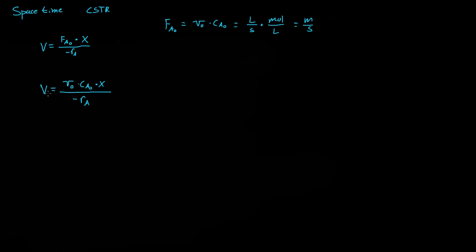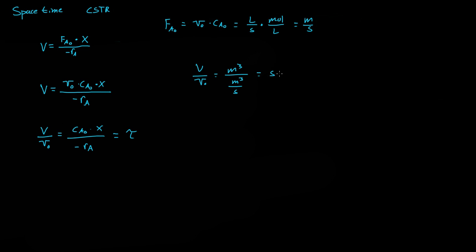Now if we divide both sides by V₀, we get the volume divided by the volumetric flow rate initially equals CA₀ times X, all divided by the negative reaction rate. We call this the space-time, because we're dividing a volume by a volumetric flow rate, and that gives us time. If the volume is in meters cubed and the volumetric flow rate is in meters cubed per second, you just get seconds — or time — and we give it the symbol tau and call it space-time.